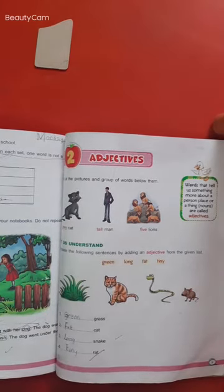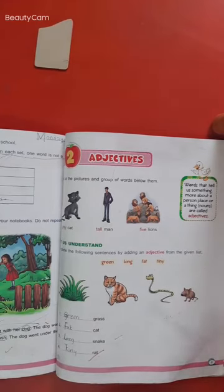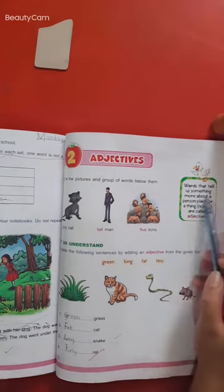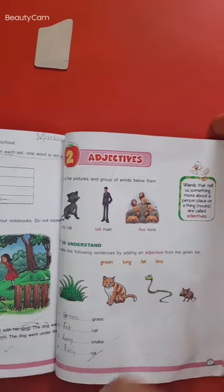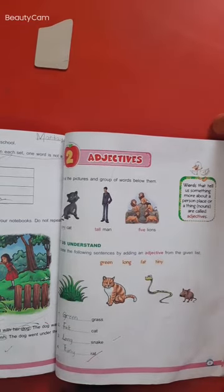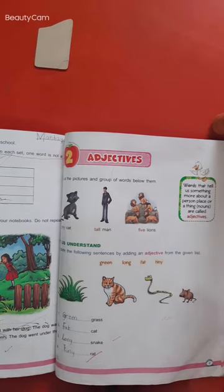I have told you about adjectives. I will explain again. What is it? Words that tell us something more about a person, place or thing are called adjectives.